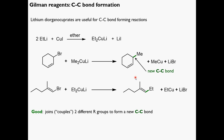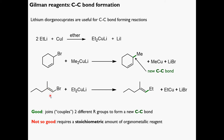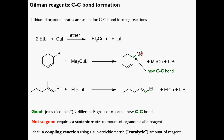The Gilman reaction couples two different R groups to form a new carbon-carbon bond — that's a good thing. However, it requires a stoichiometric amount of the Gilman reagent. The ideal would be a coupling reaction where we use only a substoichiometric, or catalytic, amount of the organometallic reagent — meaning much less than one equivalent — because the active part of that reagent would be regenerated as the reaction proceeds. This alludes to the catalytic cycles we'll explore shortly.